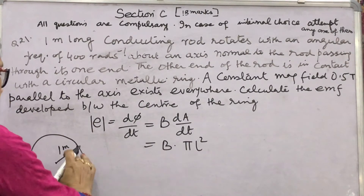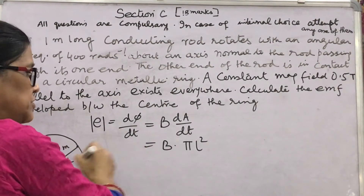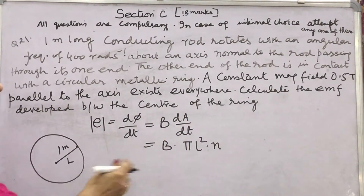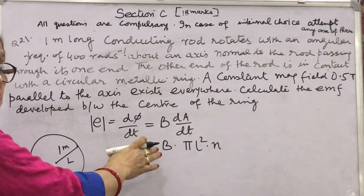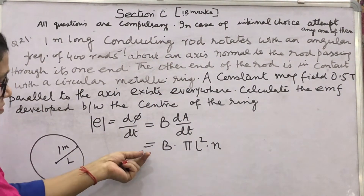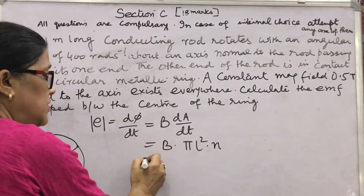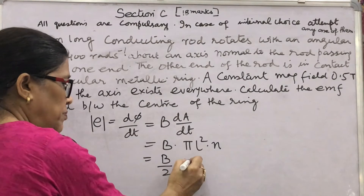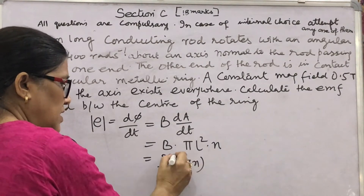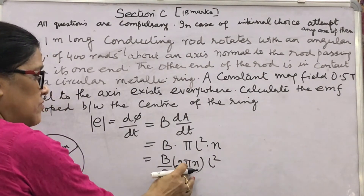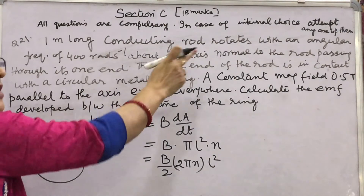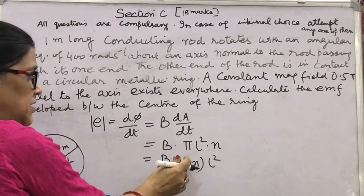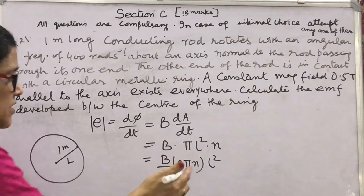The area swept is pi L² and the rod makes n revolutions per second. So EMF = B × pi L² × n. To introduce angular frequency omega = 2πn, we write EMF = (B/2) × 2πn × L² = (1/2) × B × omega × L². This brings the angular frequency into the expression through division and multiplication by 2.